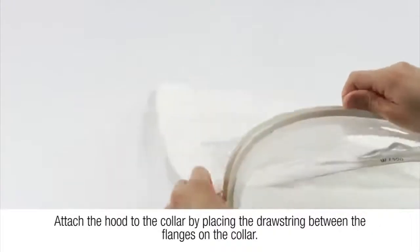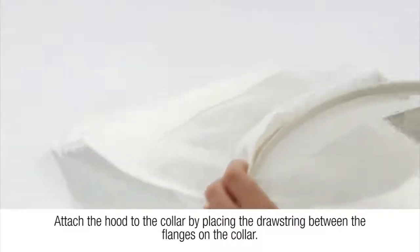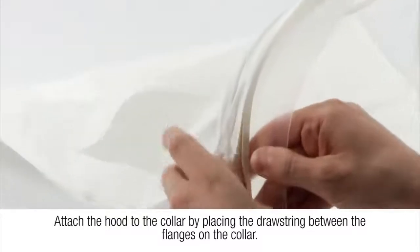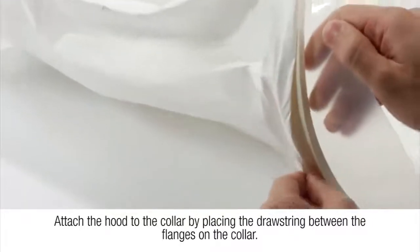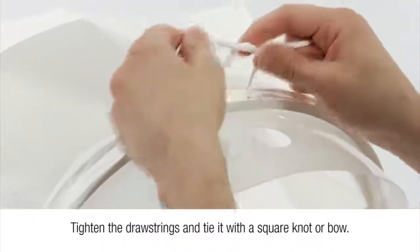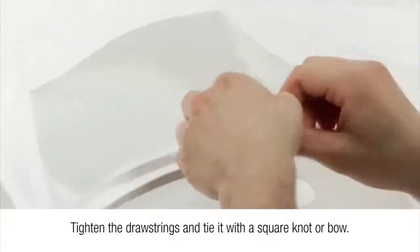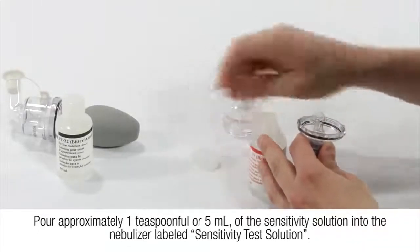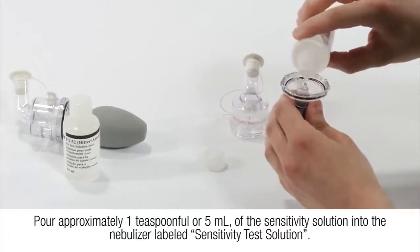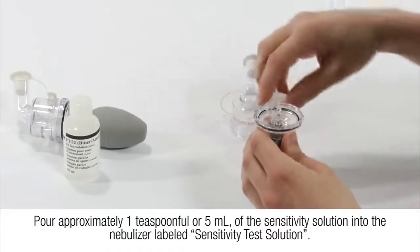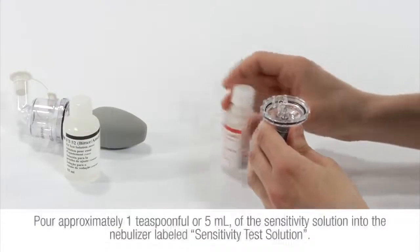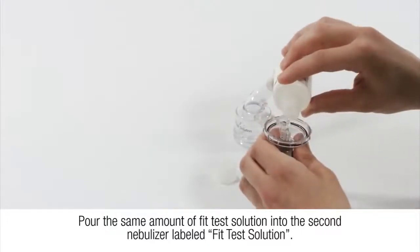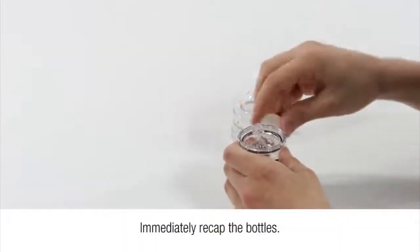To prepare the qualitative fit test apparatus, attach the hood to the collar by placing the drawstring between the flanges on the collar. Tighten the drawstrings and tie it with a square knot or bow. Pour approximately one teaspoonful or five milliliters of the sensitivity solution into the nebulizer labeled sensitivity test solution. Pour the same amount of fit test solution into the second nebulizer labeled fit test solution. Immediately recap the bottles.